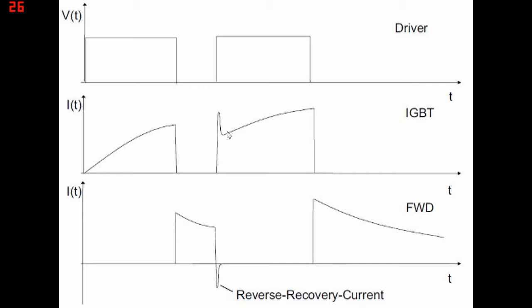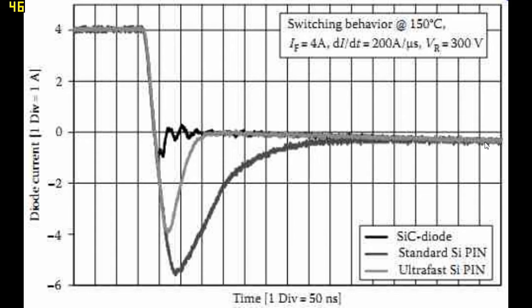So, that's the freewheeling diode. That's what it does. And that's why it causes this kind of nasty current spike during turn.